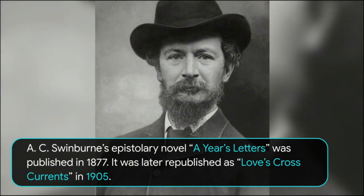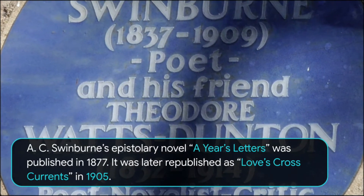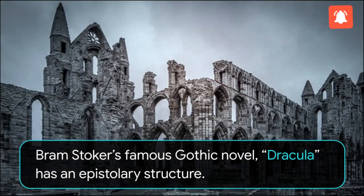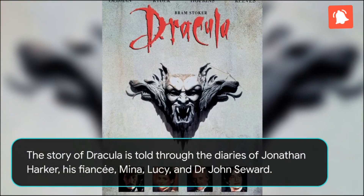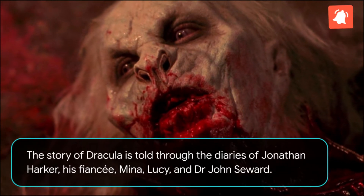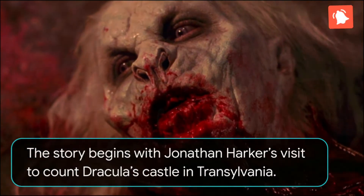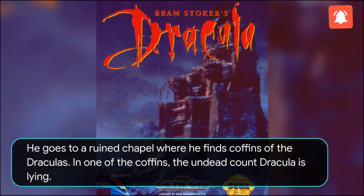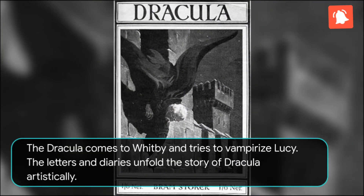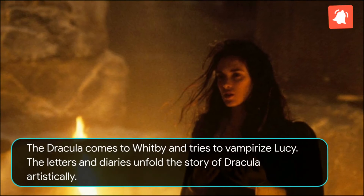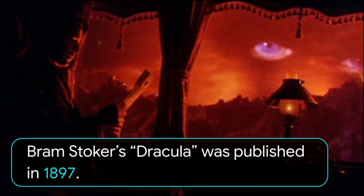A.C. Swinburne's epistolary novel A Year's Letters was published in 1877 and later republished as Love's Cross Currents in 1905. Bram Stoker's famous Gothic novel Dracula has an epistolary structure. The story is told through the diaries of Jonathan Harker, his fiancée Mina, Lucy, and Dr. John Seward. The story begins with Jonathan Harker's visit to Count Dracula's castle in Transylvania, where he finds coffins of the Draculas in a ruined chapel, with the undead Count Dracula lying in one of them. Dracula comes to Whitby and tries to vampirize Lucy. The letters and diaries unfold the story artistically. Bram Stoker's Dracula was published in 1897.